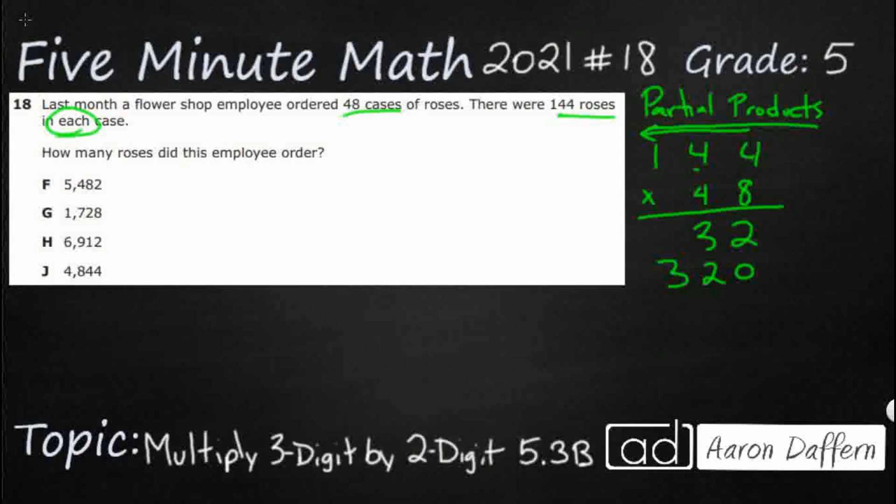Then 8 times 1 is 8, but that's really 100. So that's 8 times 100, which makes 800.